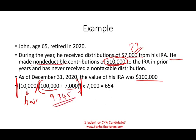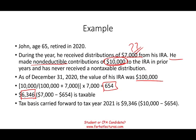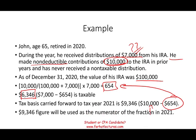We take that ratio of 9.345% and multiply it by the $7,000 distribution. The non-taxable portion from the $7,000 is $654. That means the remainder is taxable — the taxable portion is $6,346. But remember what happened to John's basis: his basis was $10,000, he got back $654 in 2020, so his basis going forward will be reduced by $654. Year after year, his basis will go down as he receives distributions.